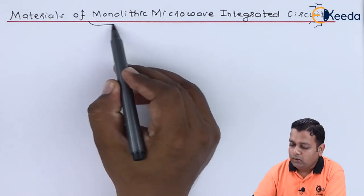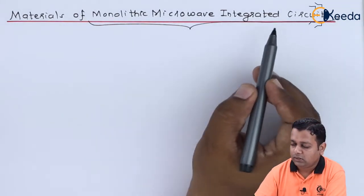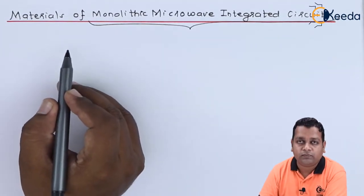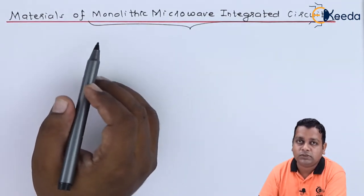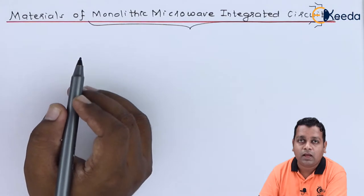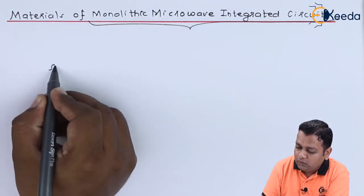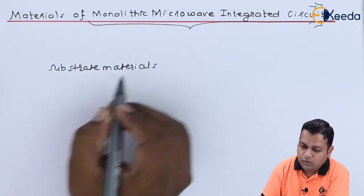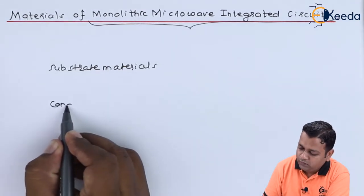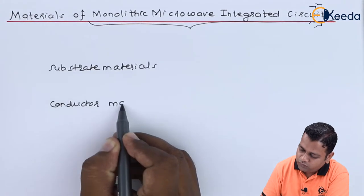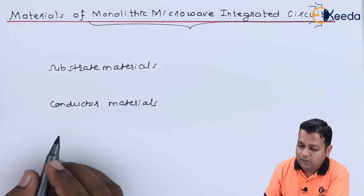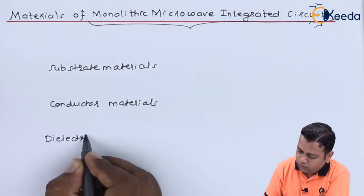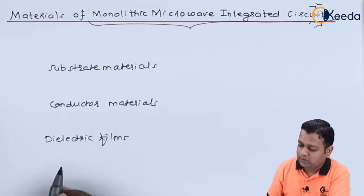The monolithic microwave integrated circuit concept should be clear from the previous video. The different kinds of materials involved in the fabrication of these devices, used at microwave frequencies, are listed as: substrate materials, conductor materials, dielectric films, and resistive films.